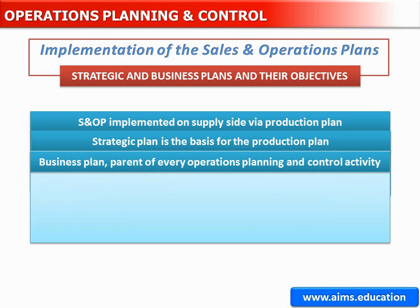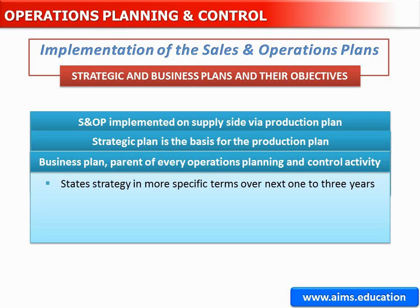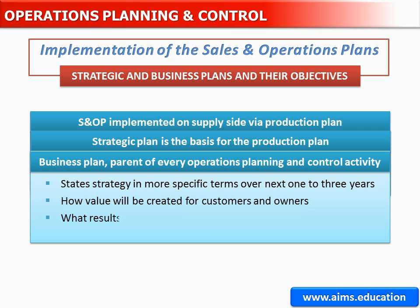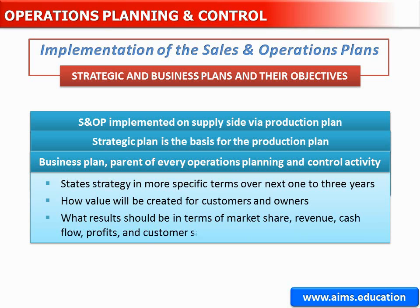The business plan is the parent of every operations planning and control activity. An organisation's business plan states organisational strategy in more specific terms and sets goals for achieving the strategy over the next one to three years or more. The business plan specifies how value will be created for both customers and owners, and what the results should be in terms of market share, revenue, cash flow, profits, and measurements such as customer satisfaction.